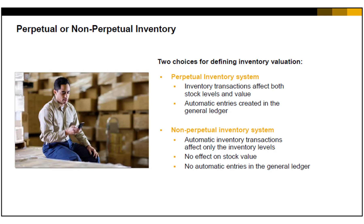Automatic journal entries for the change in stock value are created in the general ledger. In our course's business example, we work with a perpetual inventory system, so this is what you see in the demonstrations and practice sessions.